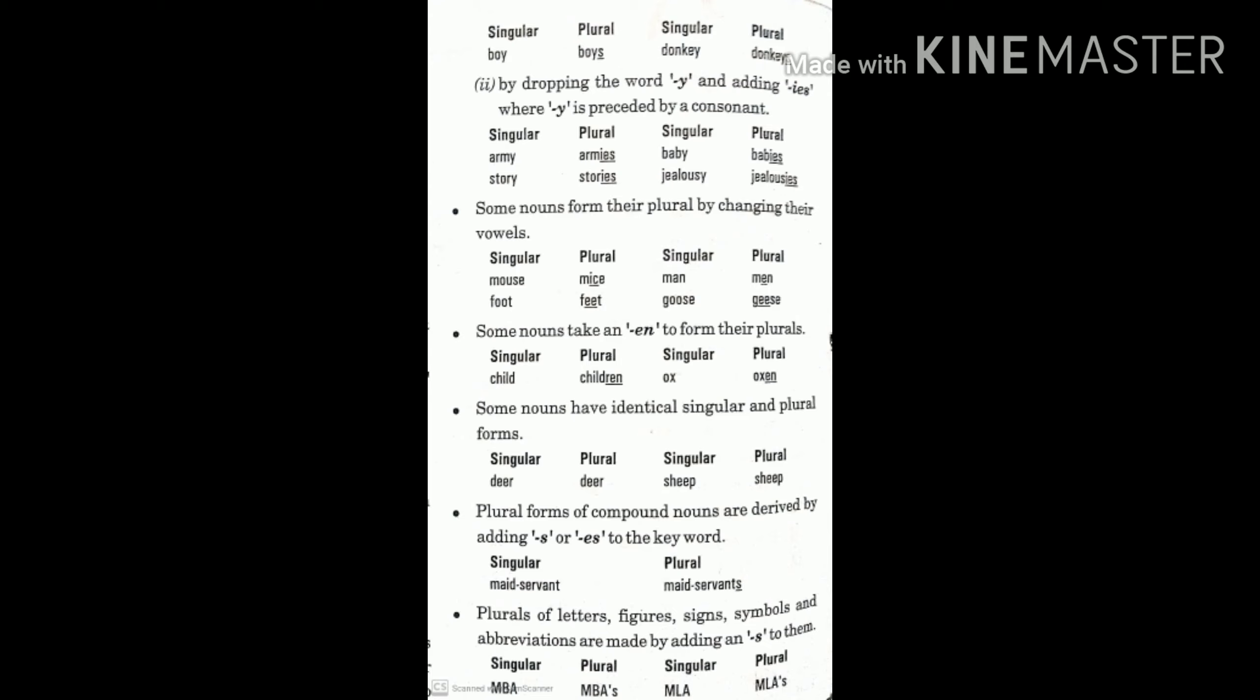Some nouns have identical singular and plural forms. Like deer remains deer and sheep remains sheep only. Plural forms of compound nouns are derived by adding s or es to the keyword. Like maidservant, maidservants.